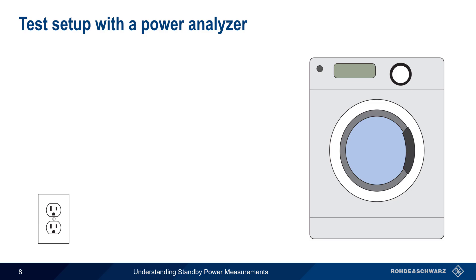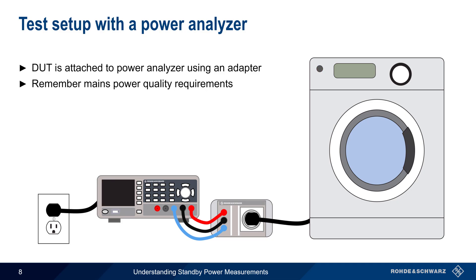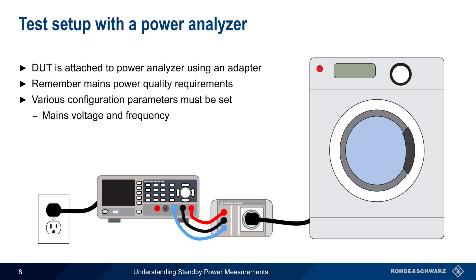Let's look at a typical test setup for a standby power measurement. The device under test is connected to a power analyzer, usually by plugging it into a special mains adapter. The power analyzer is then plugged into mains power. Remember that there are requirements for mains power with regards to the nominal voltage and frequency, as well as with regards to distortion. If these cannot be met via a standard wall outlet, a special AC power supply may be required. The next step is configuring the test parameters on the power analyzer. These include the mains voltage and frequency, and things such as the DUT's expected crest factor, current consumption pattern, test duration, etc.